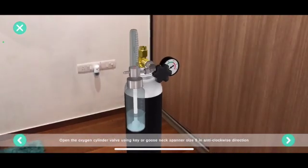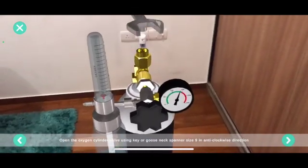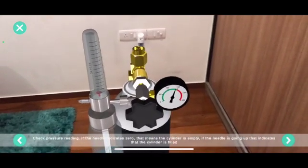Open the oxygen cylinder valve using a key or gooseneck spanner size 9 in an anti-clockwise direction. Check the pressure reading.